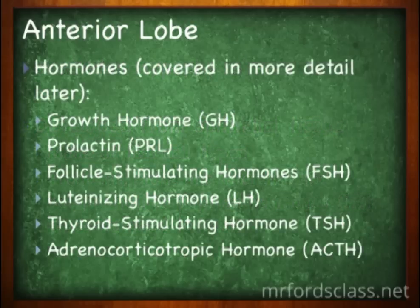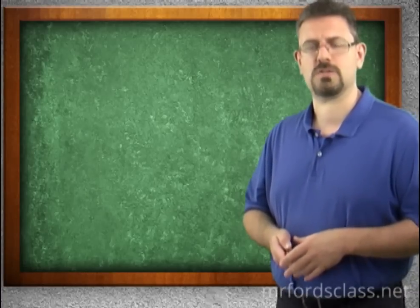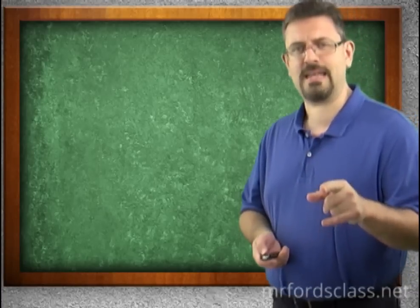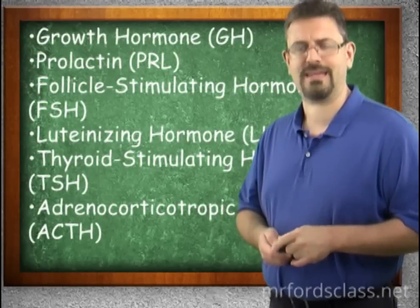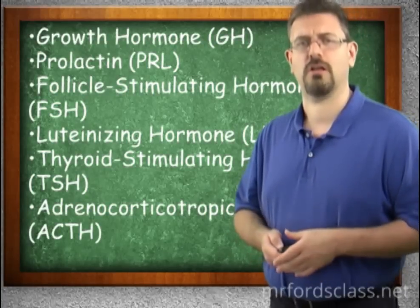The six hormones of the anterior lobe are: growth hormone (GH), prolactin, follicle-stimulating hormone, luteinizing hormone, thyroid-stimulating hormone, and the adrenocorticotrophic hormone. We will talk about each of these in more detail in our next video. You might also notice that abbreviations are used — for example, instead of growth hormone written out, you might just see GH written in the endocrinology world.